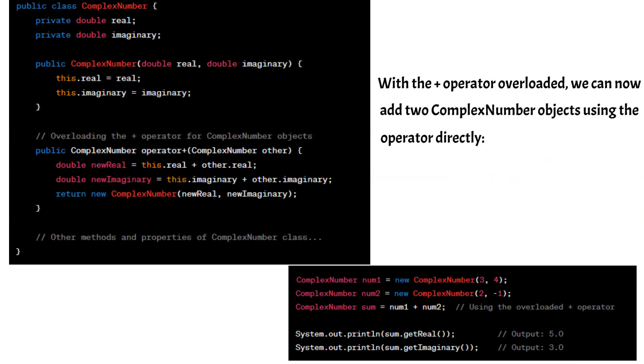With the plus operator overloaded, we can now add two complex number objects using the operator directly. In this code snippet, the plus operator is used to add num1 and num2, and the result is stored in the sum variable. The overloaded operator plus method is invoked, performing the addition based on the custom logic defined in the class.